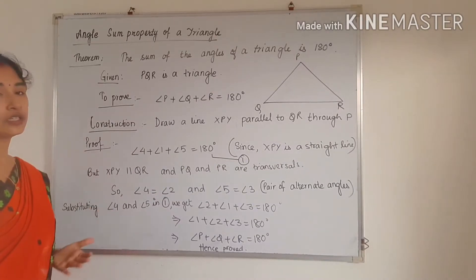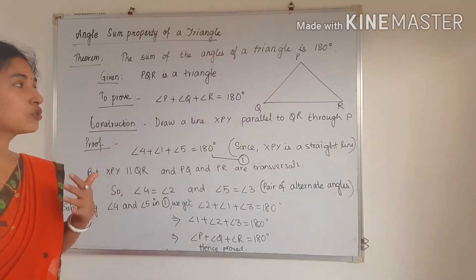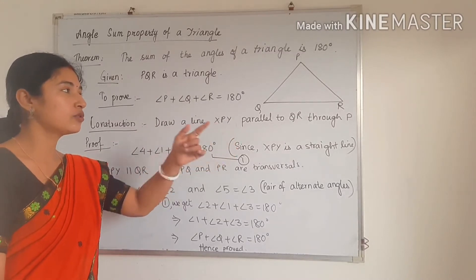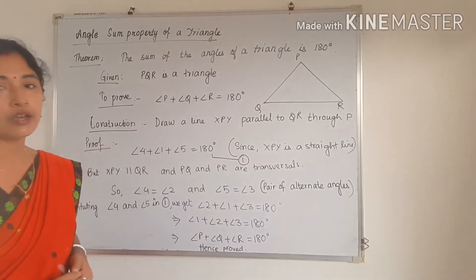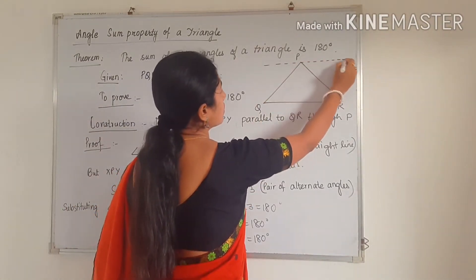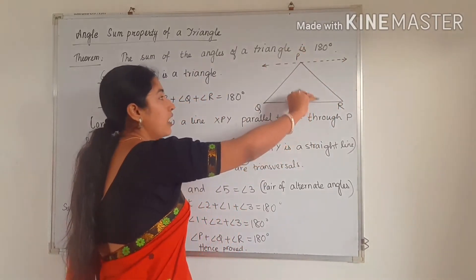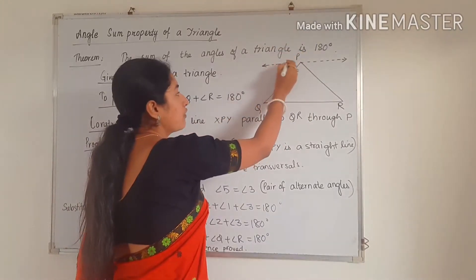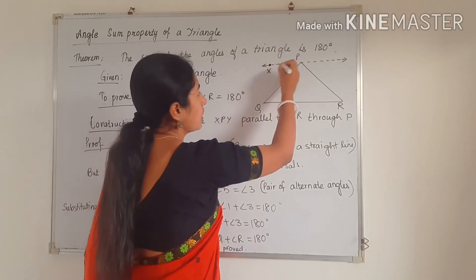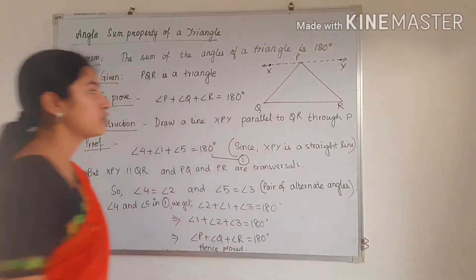Next, how to prove it? For proving it, we have to do some construction. What construction will we do? Draw a line XPY parallel to QR. So here we are drawing a line through P so that it is parallel to QR. The line which we have drawn, we name it XPY. So XPY is parallel to QR, and we have drawn this line through the point P.